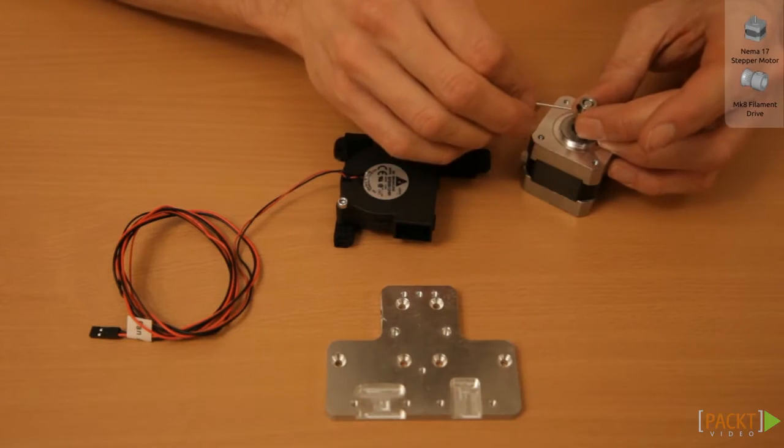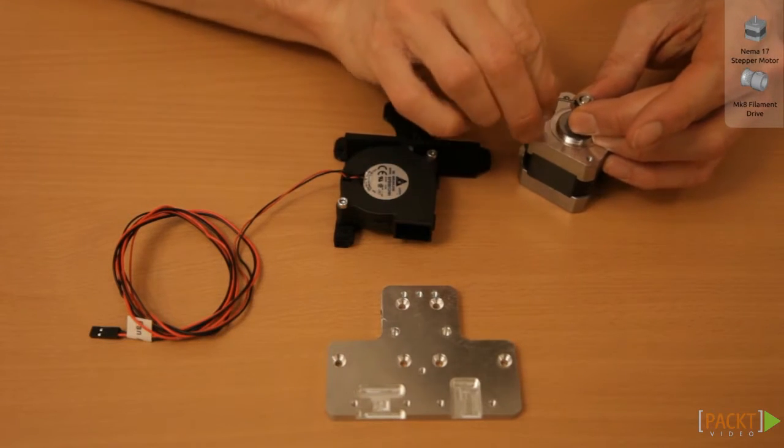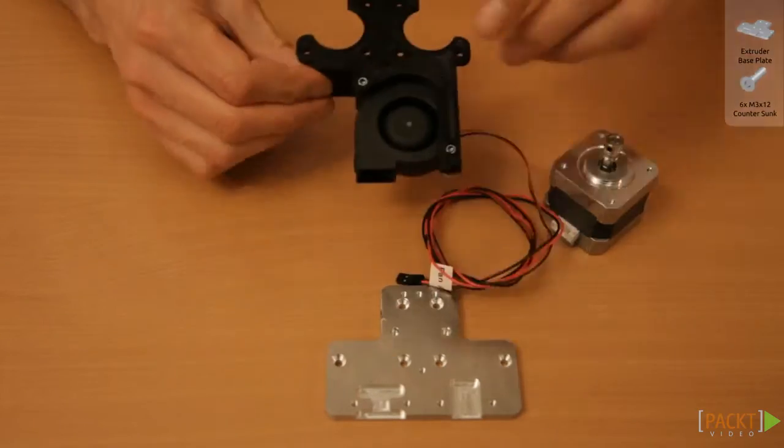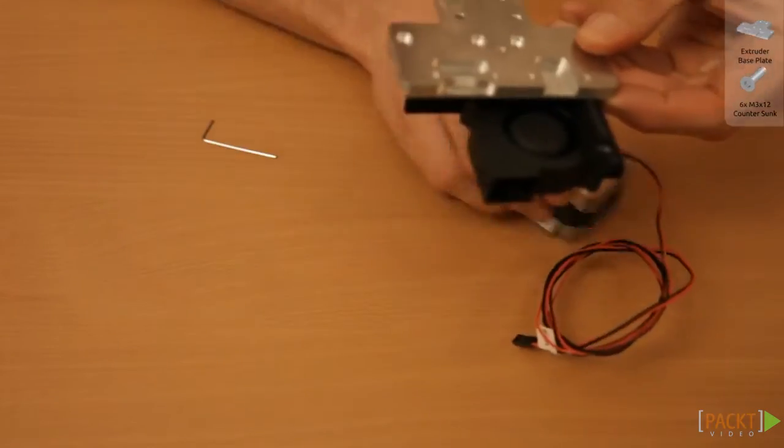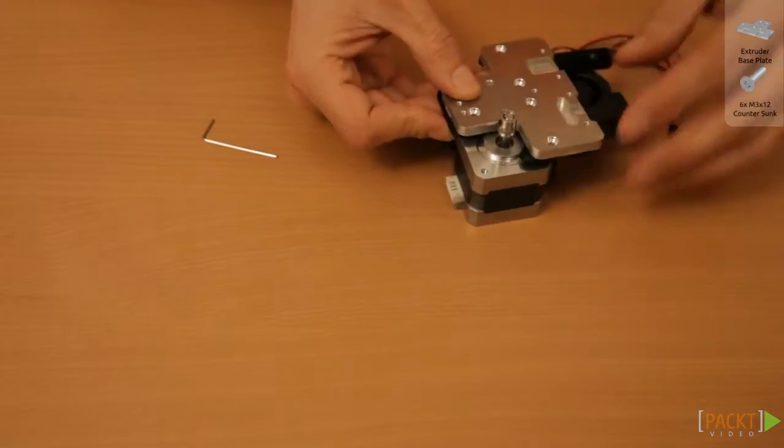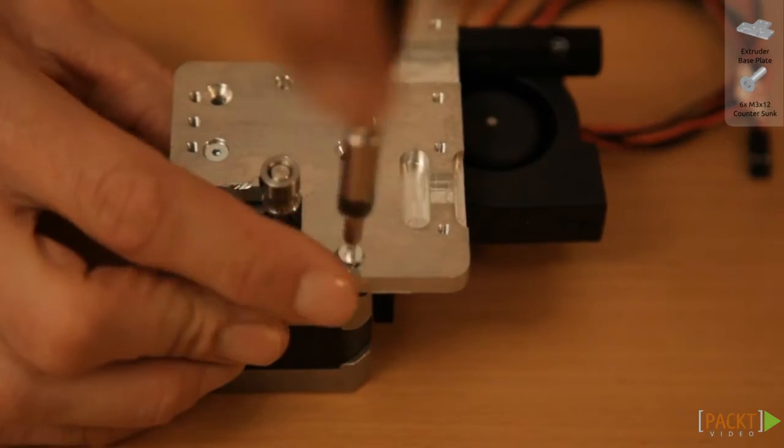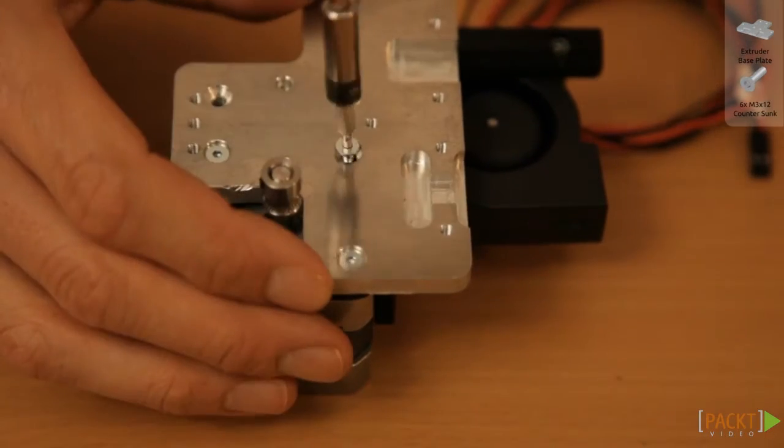Mount the filament pulley to the motor. The screw should be on the top and ends of the pulley and the motor shaft in line. Mount the motor with three M3 x 12 countersunk screws.